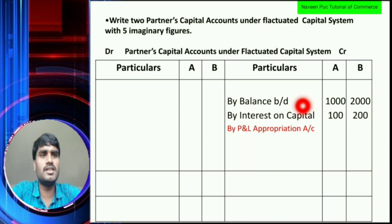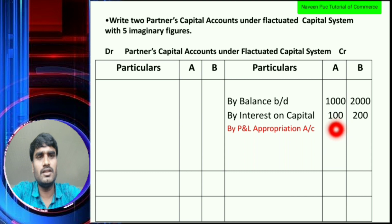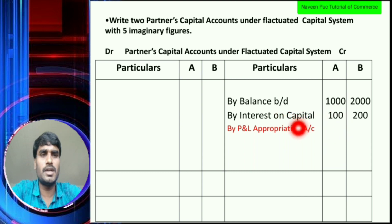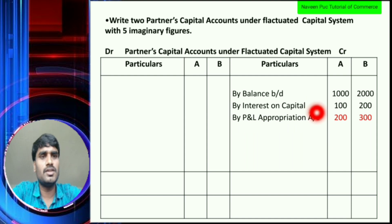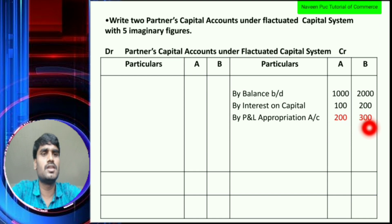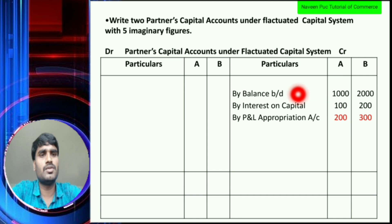The third item: by balance brought down is capital, next is interest on capital, and then the Profit and Loss Appropriation Account — this is nothing but profit brought down. Partner A amount is Rs. 200 and Partner B is Rs. 300.